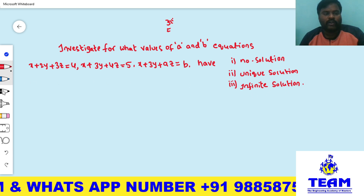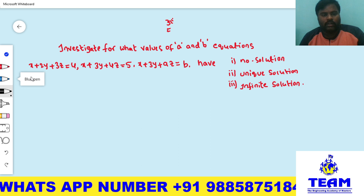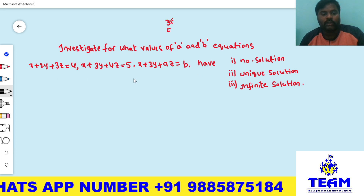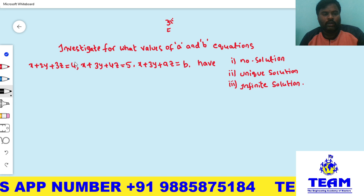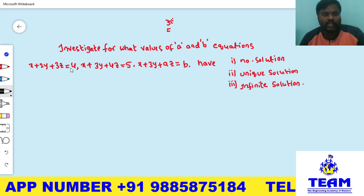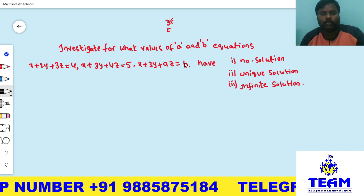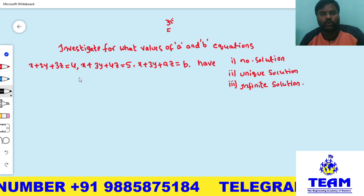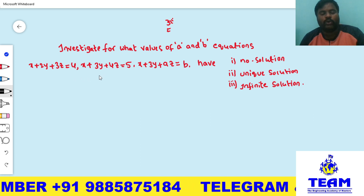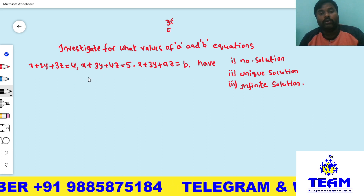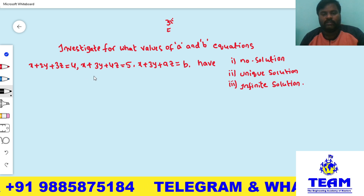By observation we can say these equations are a system of linear equations. On the right side we have 4, 5, and b — so at least one non-zero element is present on the right side. Therefore, this is a system of non-homogeneous linear equations.